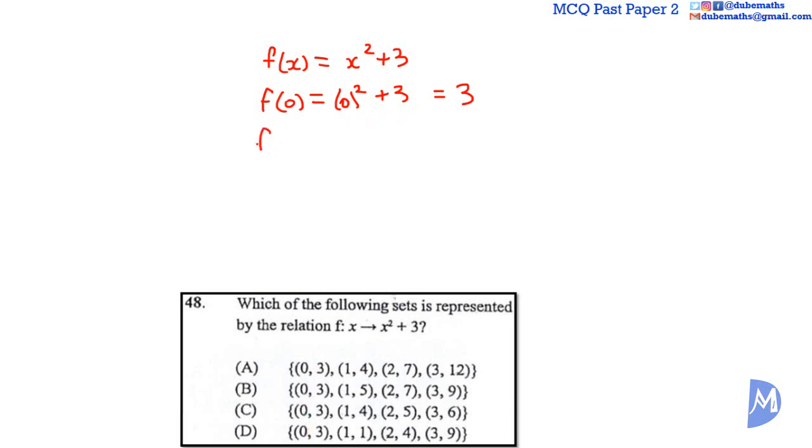F of 1 is equal to 1 squared plus 3. 1 squared is 1. 1 added to 3 is equal to 4. So 1, 4. The answer must be either A or C.